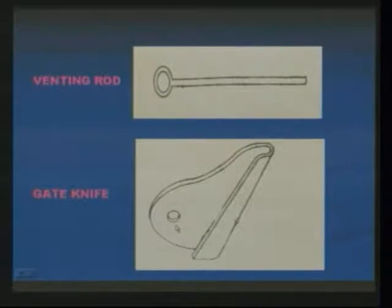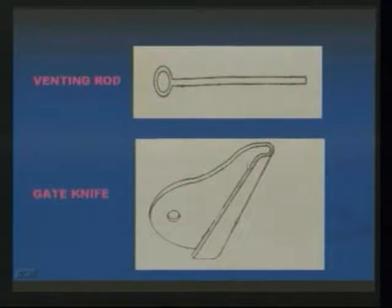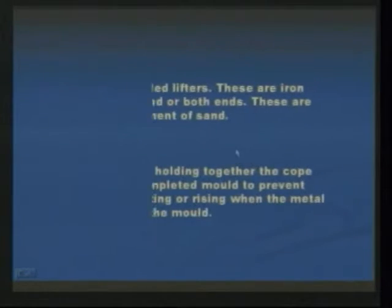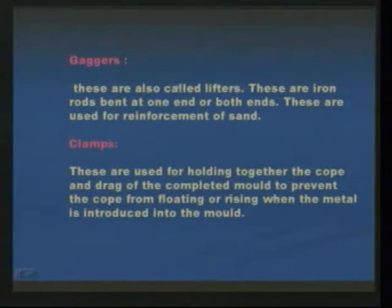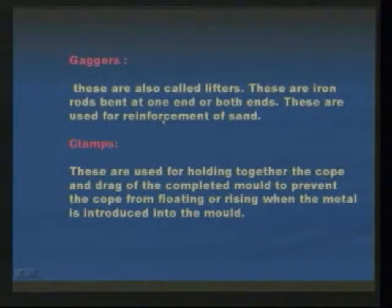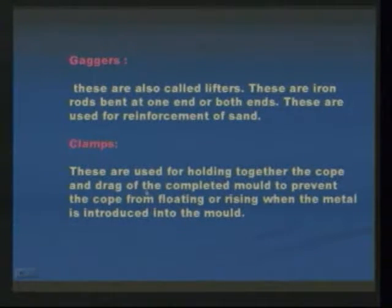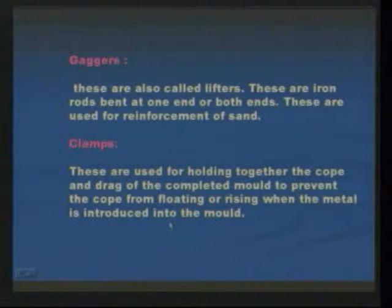Next one is gate knife. This is used for cutting gates before the mold is actually prepared, before pouring the molten metal. Gaggers — these are also called lifters. These are iron rods bent at one end or both ends. These are used for reinforcement of the sand. Next one is clamps — these are used for holding together the cope and the drag of the completed mold to prevent the cope from floating or rising when the metal is introduced into the mold.